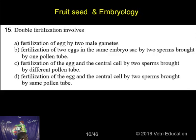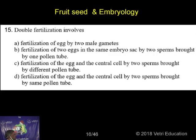D) fertilization of the egg and the central cell by two sperms brought by the same pollen tube. Here, the central cell means the secondary nucleus, so D is the correct answer — fertilization of the egg and the central cell by two sperms brought by the same pollen tube.